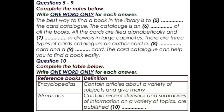Almanacs are also a type of reference book. An almanac is a book that contains recent statistics and summaries of information on a wide variety of topics. It is published annually. Information is listed alphabetically by subject. Indexes are alphabetical lists of names, titles and subjects that tell where information about each can be found in other publications. For example, the Reader's Guide to Periodical Literature can help you find magazine articles published about a particular subject.